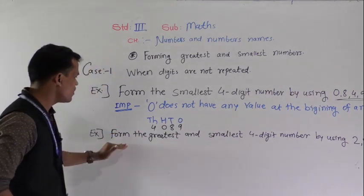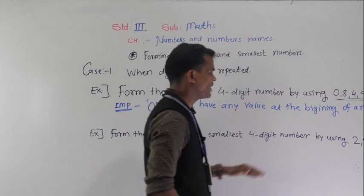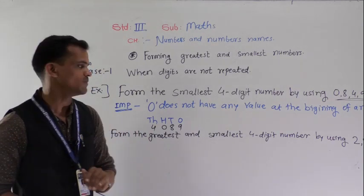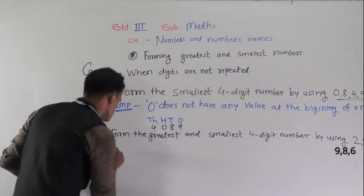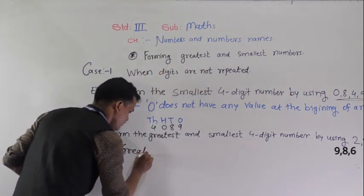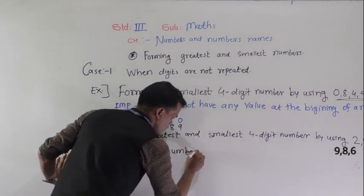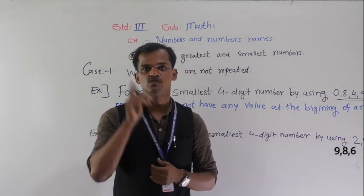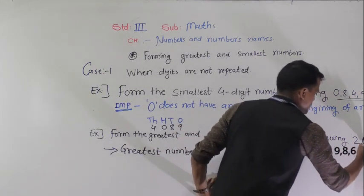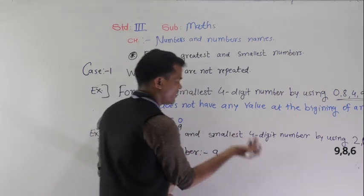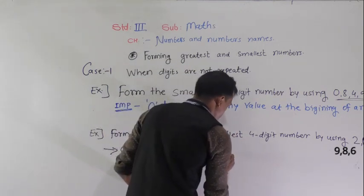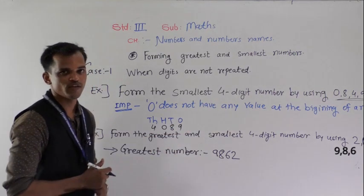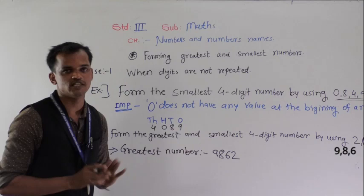Next example: form the greatest and smallest 4-digit number using 2, 9, 8 and 6. First, form the greatest number. To form the greatest number, place the digits into descending order — big to small order. Which is the biggest digit? 9. So write 9 at the first position, then 8, then 6, then 2. This is the greatest number 9862 formed. Repetition of digits is not allowed.